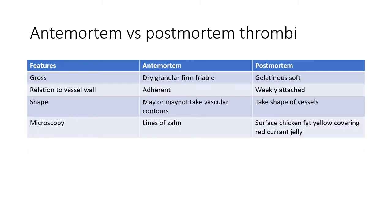It is important to see the differentiating features between antemortem and postmortem thrombi. Antemortem thrombus — formed in the living — is dry, granular, firm, and friable, and is adherent to the vessel walls. It may or may not take the shape of the blood vessel. Microscopically it shows lines of Zahn. Postmortem thrombus — formed after death — is gelatinous and soft, weakly attached, and definitely takes the shape of the blood vessel. Its surface shows a chicken-fat yellow layer covering an underlying red current-jelly appearance.